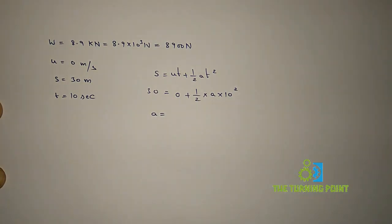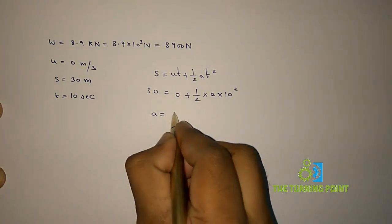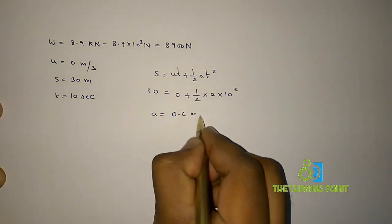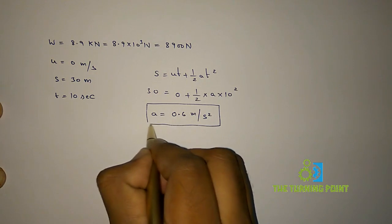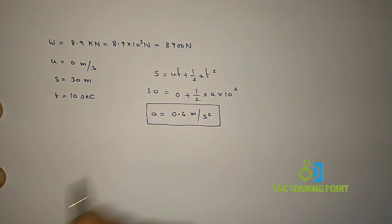From this you can find the value of acceleration. So if you simplify you will get 0.6 meters per second squared. So this is the acceleration of the mine cage.